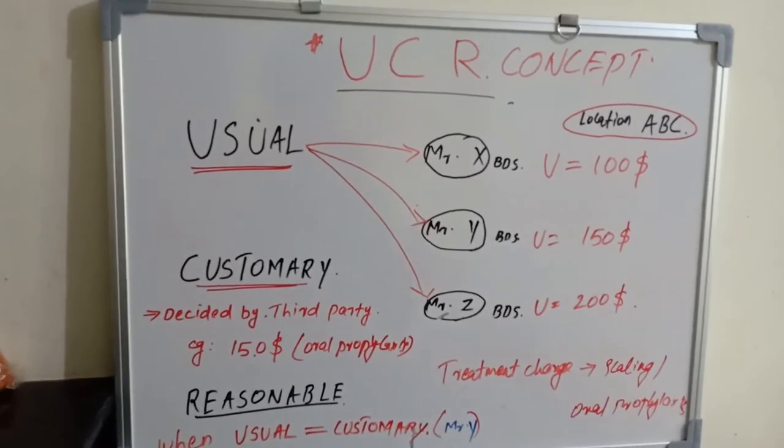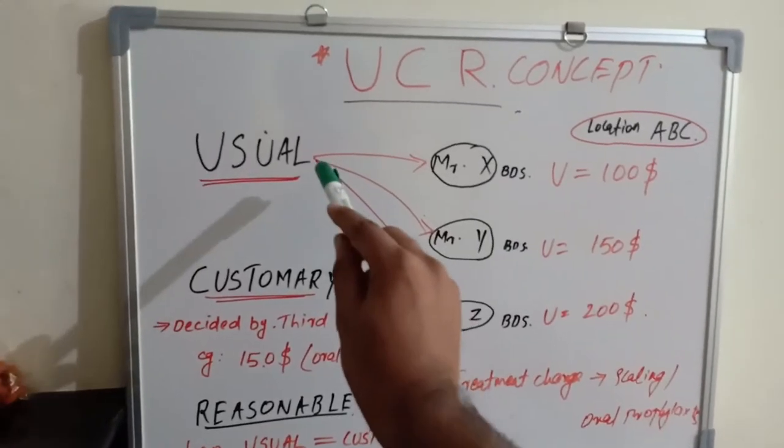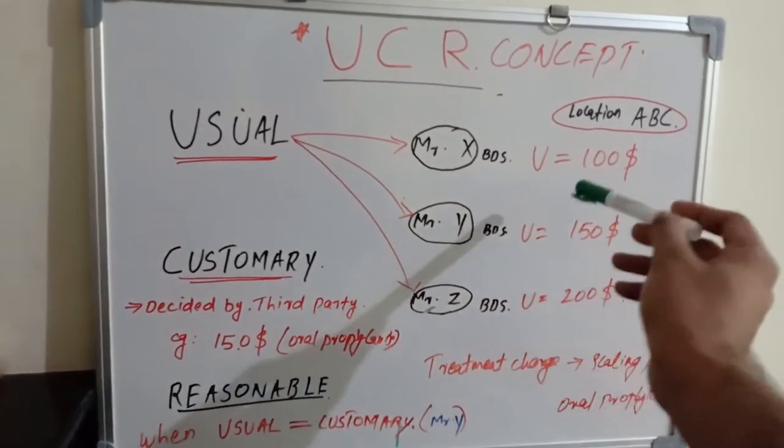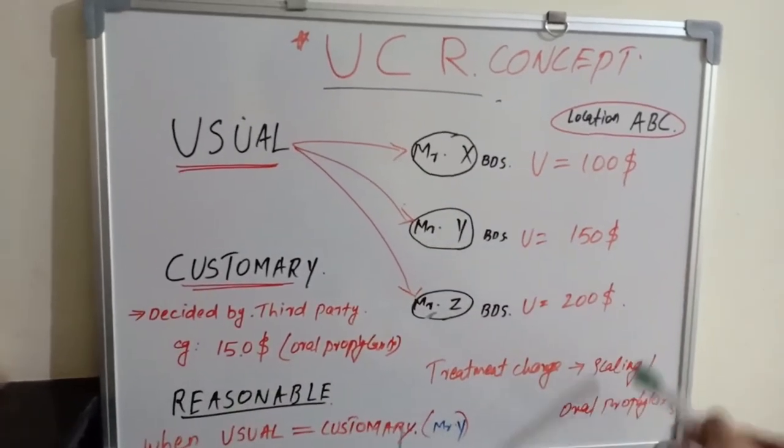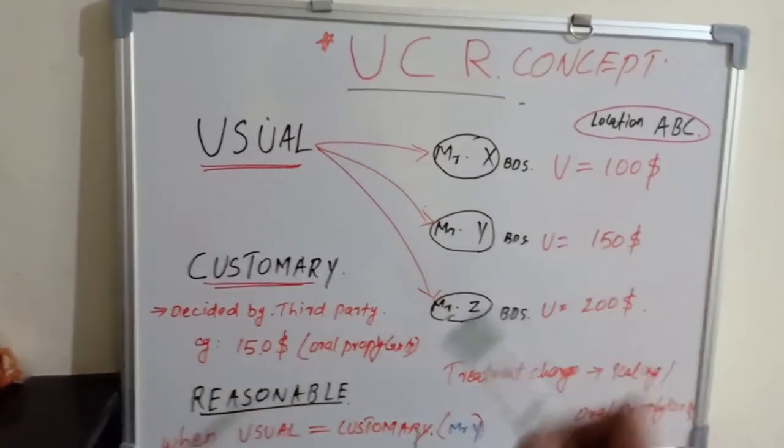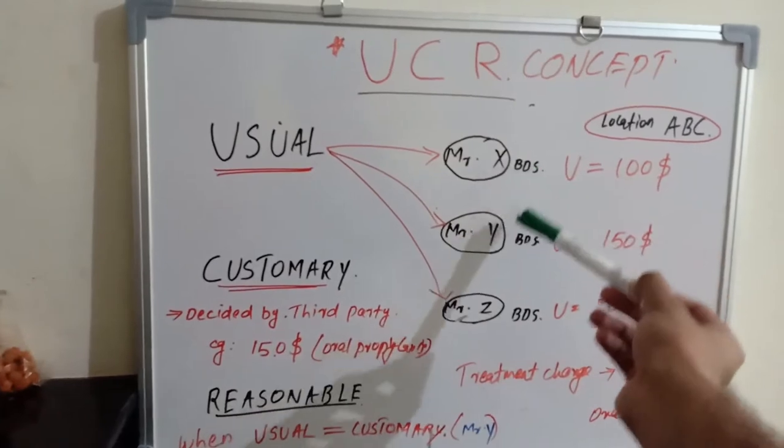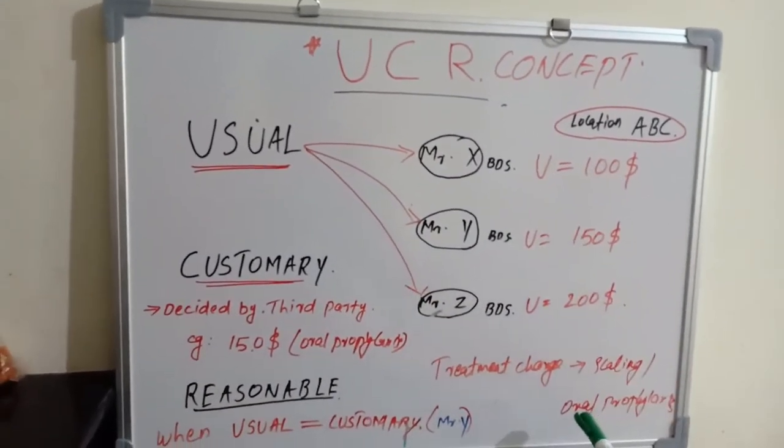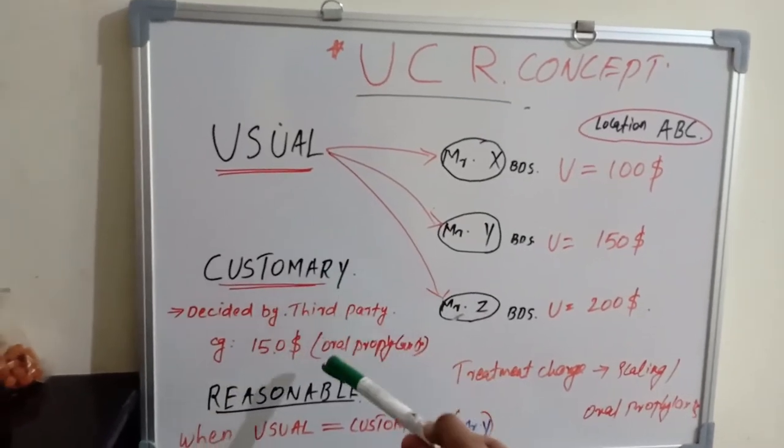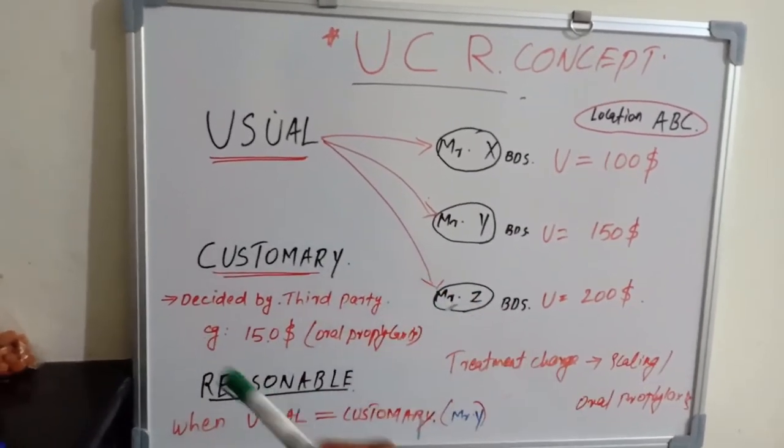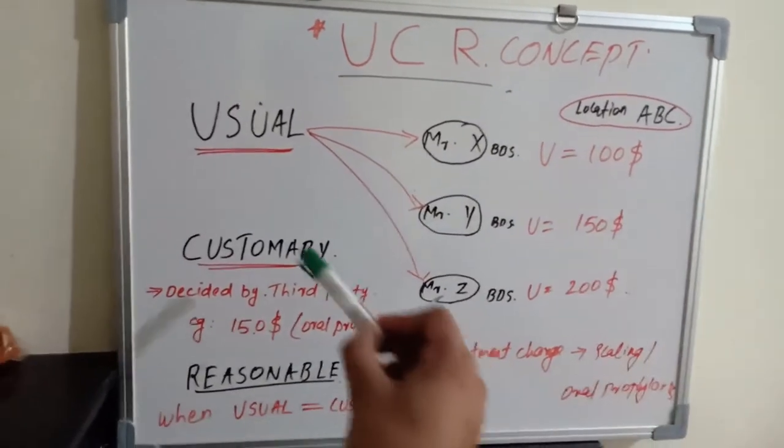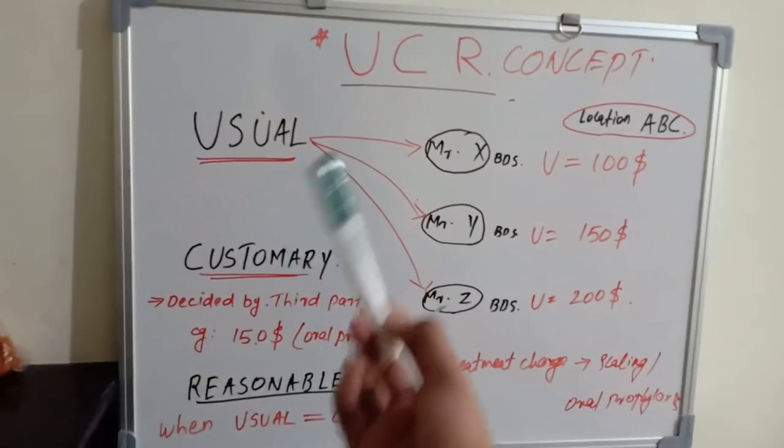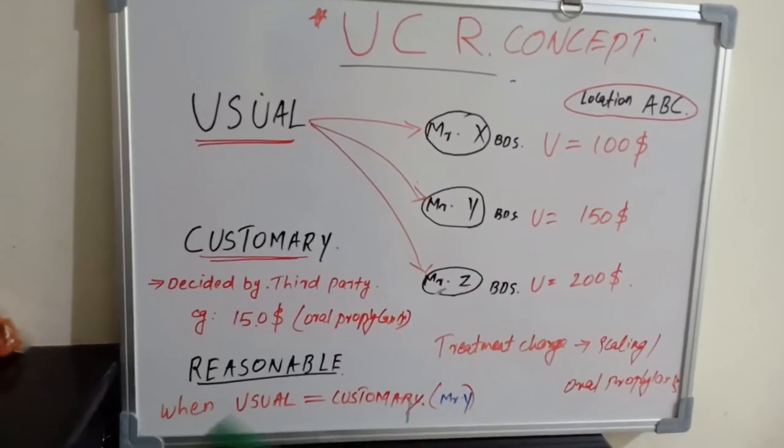This is the usual fee - the fee for a particular service at a specific location with the same qualification. If it is MDS, it can be different. For MDS qualification, the customary fee will also be different. It will be calculated among MDS people separately from BDS people at a particular location, mostly by taking percentile.